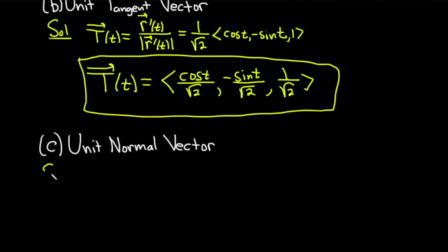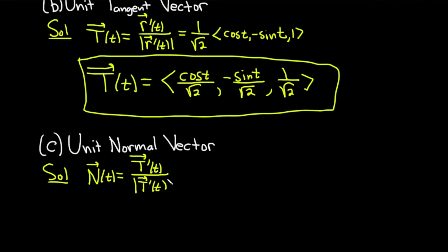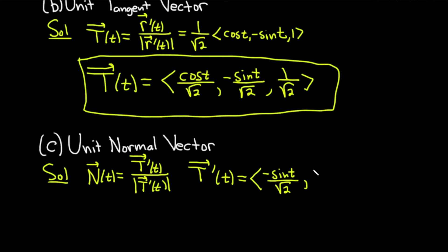Now let's find the unit normal vector. The formula is N of t equals the derivative of the unit tangent vector divided by the magnitude of that derivative. We take T prime by differentiating each component. The square root of 2s are constants, so they stay. The derivative of cosine is negative sine over root 2, the derivative of negative sine is negative cosine over root 2, and the last component is a constant, so its derivative is 0.